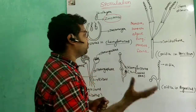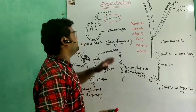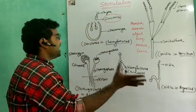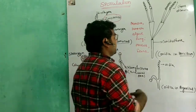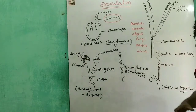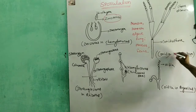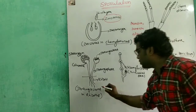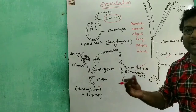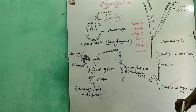Non-motile spores do not bear flagella. Examples of non-motile spores are conidia, oidia, sporangiospores, Chlamydospores, and aplanospores.